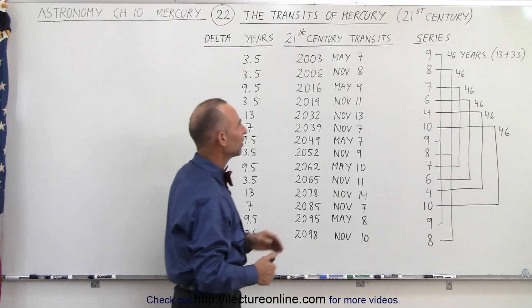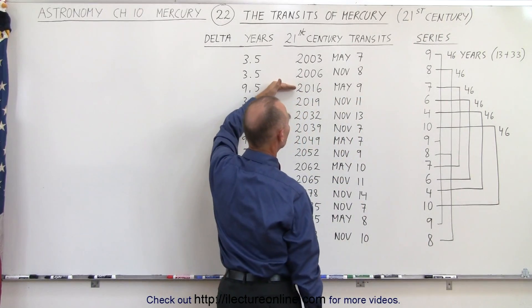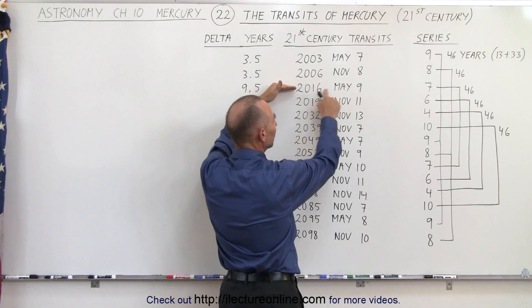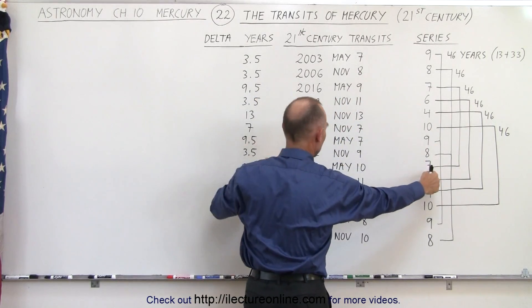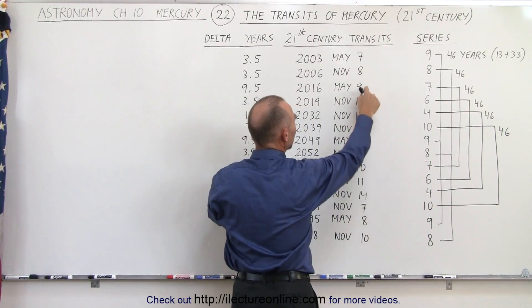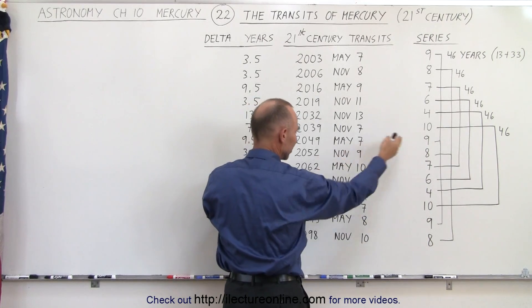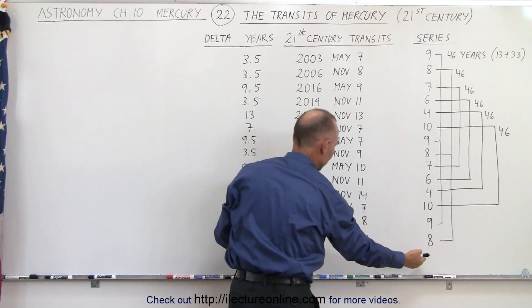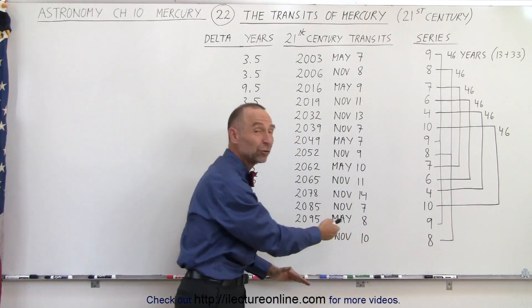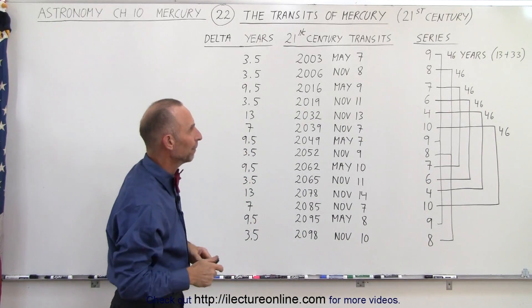Then we have the next series, which is series 7. We have the transit just recently in 2016, May 9th. We go to the next event — that would be May 10th, 46 years later. And then 46 years later, it will be like May 10th or May 11th and so forth. So you can see the pattern in there.